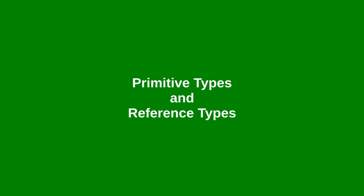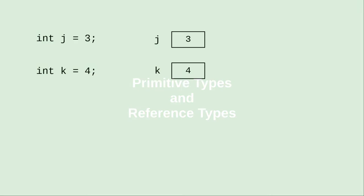When we deal with primitive types like int, double, char, and boolean, the data is stored directly in the memory address for the variable. When we do this assignment, j is assigned k, the current value of k is copied into j's memory area.